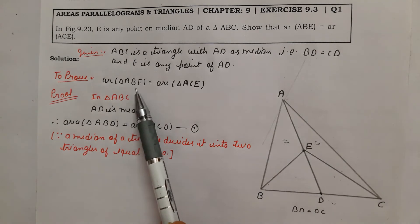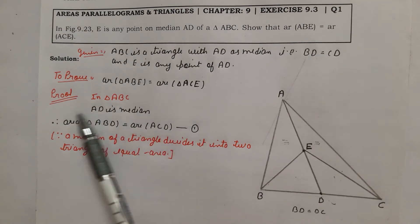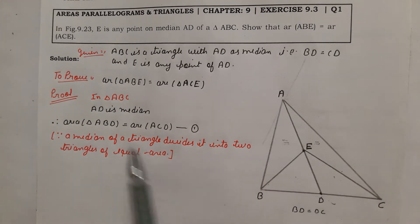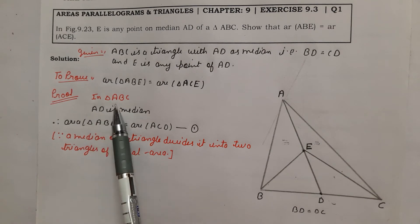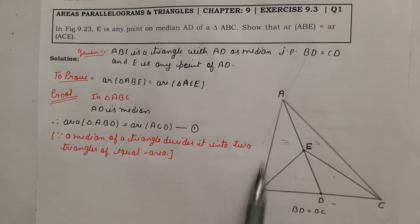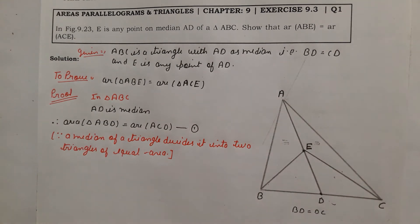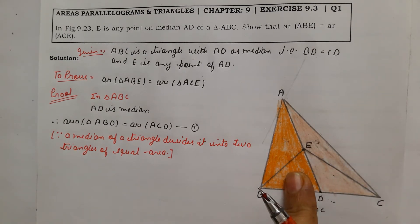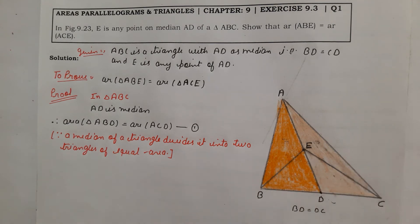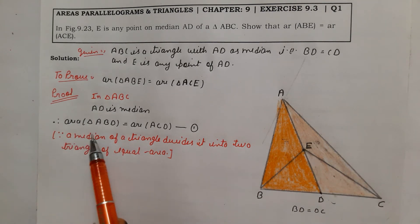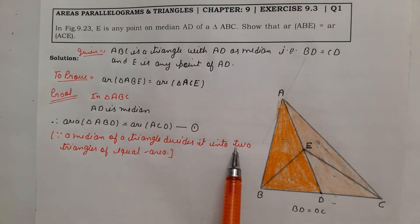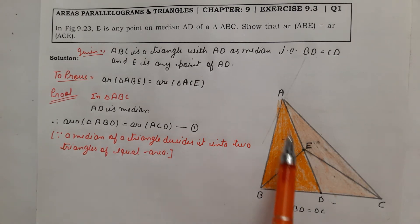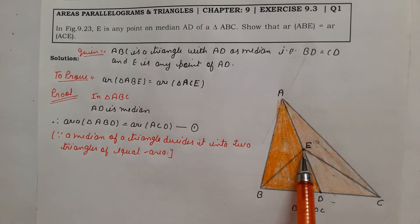To prove: area of triangle ABE is equal to area of triangle ACE. First, since AD is the median of triangle ABC, by example 3 we can write: area of triangle ABD equals area of triangle ACD. The reason is that a median of a triangle divides it into two triangles of equal area.